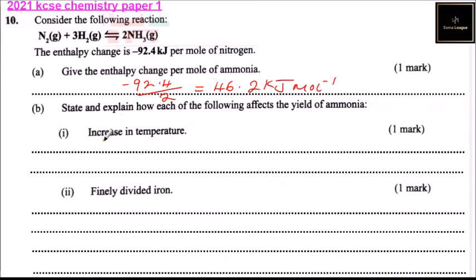Part B states and explains how each of the following affects the yield of ammonia. We have increase in temperature. Increase in temperature lowers the yield of ammonia, or production of ammonia, since the forward reaction is exothermic and the backward reaction is endothermic. So it lowers the yield of ammonia.